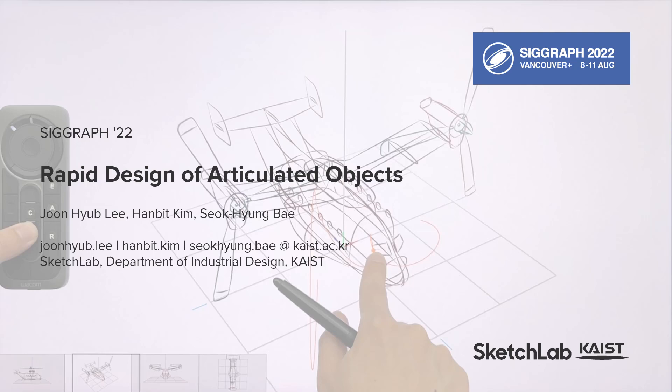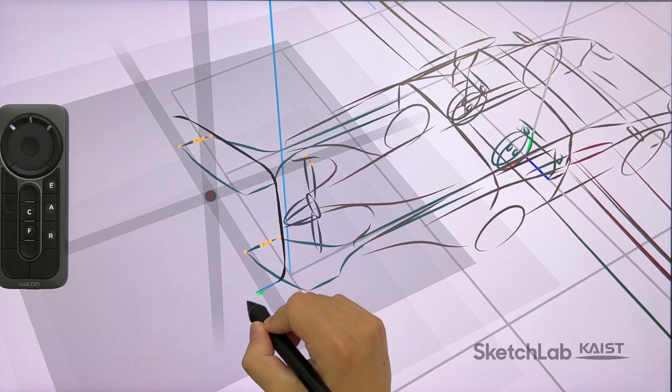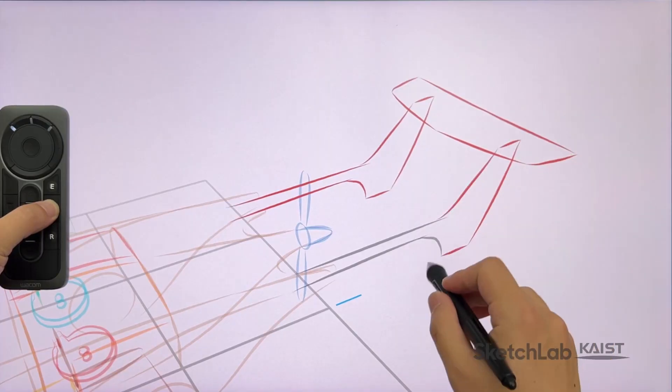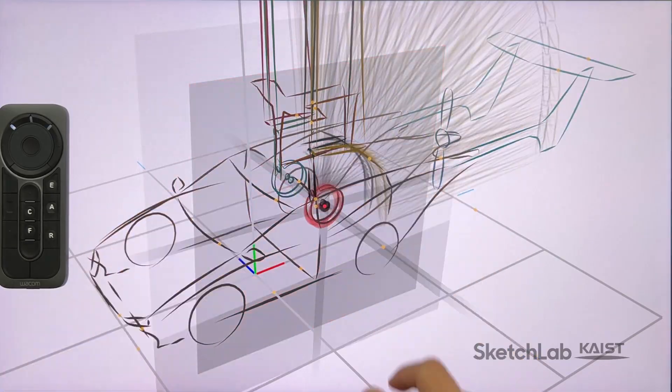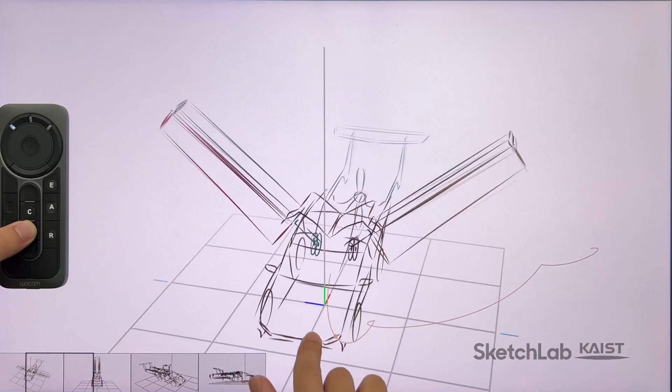We present a 3D sketching system for rapidly designing articulated objects. The designer can sketch key curves in 3D, segment them into different parts, rig them with suitable types of joints, pose them to create a sequence of keyframes, and create a short film by smoothly connecting it.